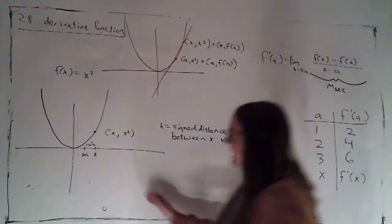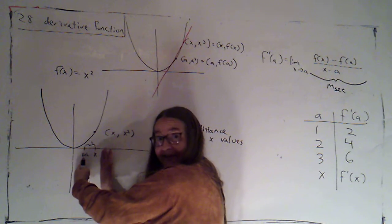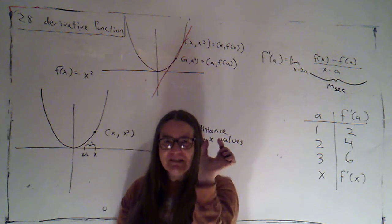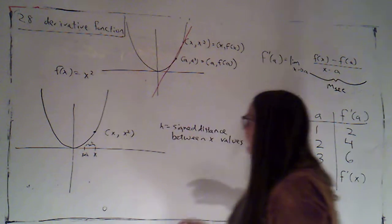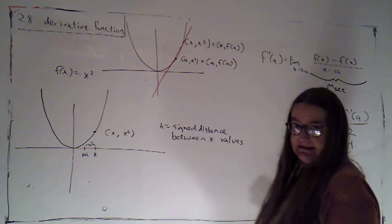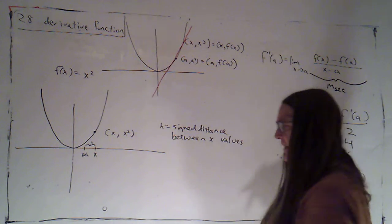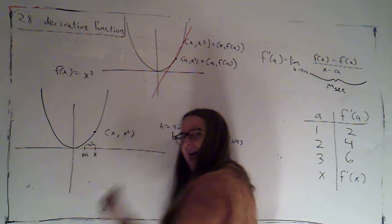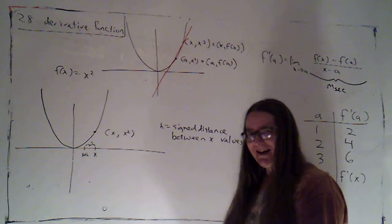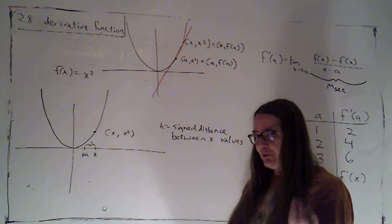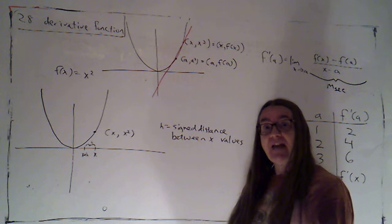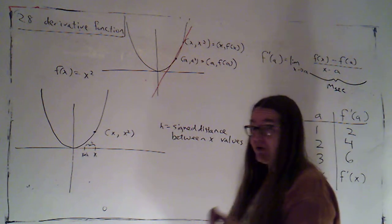So that h here is the signed distance between my x values. So instead of focusing on what this second x value is, I'm focusing on how far away it is from x. And I said it's a signed distance because you might have been surprised that I put x plus h to the left of x. I did that on purpose to point out that we should not assume that h is necessarily a positive number.